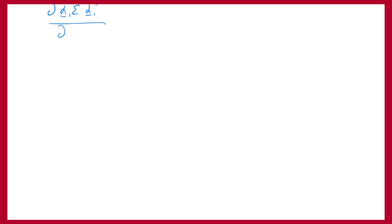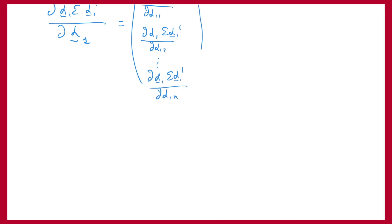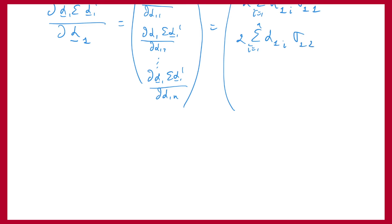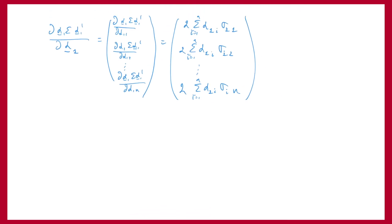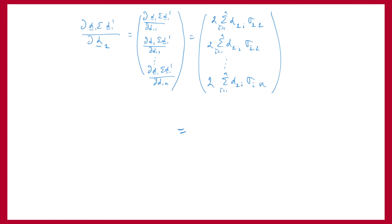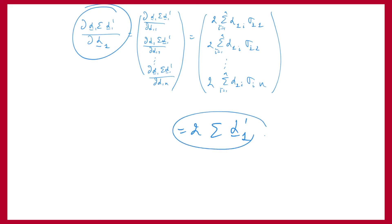Now if I want to calculate the full derivative of alpha_1 * sigma * alpha_1^T with respect to the vector alpha_1, this equals a vector containing all the component-wise derivatives. From the previous slide, we know that the first term equals this expression. And you can verify that this is actually the same as the matrix operation 2 times the matrix sigma times the vector alpha_1 transposed. So we find that this derivative equals 2 * sigma * alpha_1^T.